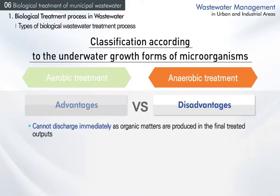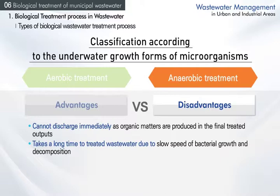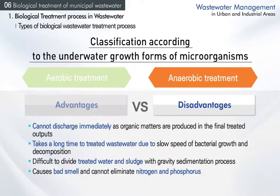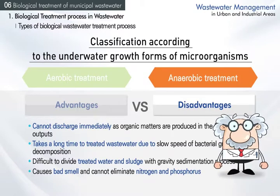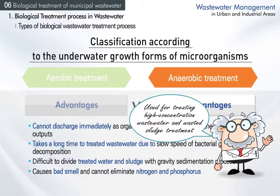Since organic matters other than inorganic matters such as carbon dioxide and water are produced as by-products, treated water cannot be discharged directly to rivers or lakes. Also, anaerobic bacteria grow and decompose pollutants slowly, taking a long time. Maintaining high concentration of microorganisms makes it difficult to separate treated water and sludge with gravity sedimentation. Moreover, anaerobic treatment causes much worse smell than aerobic treatment and cannot biologically eliminate nitrogen and phosphorus. Thus, anaerobic treatment is mainly used for high concentration wastewater or wasted sludge from municipal treatment.